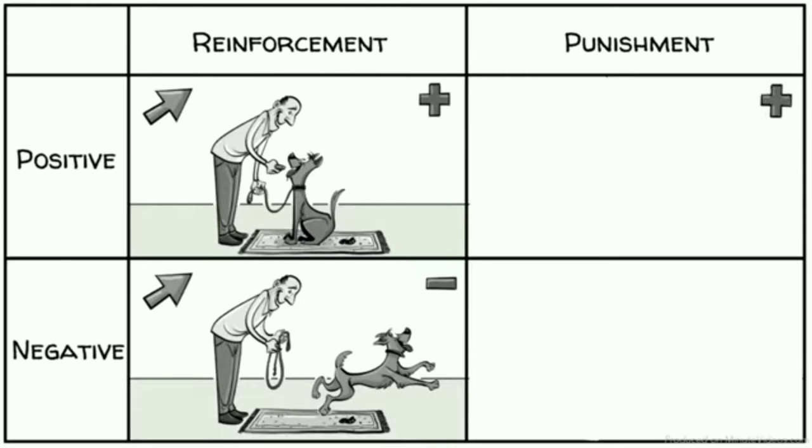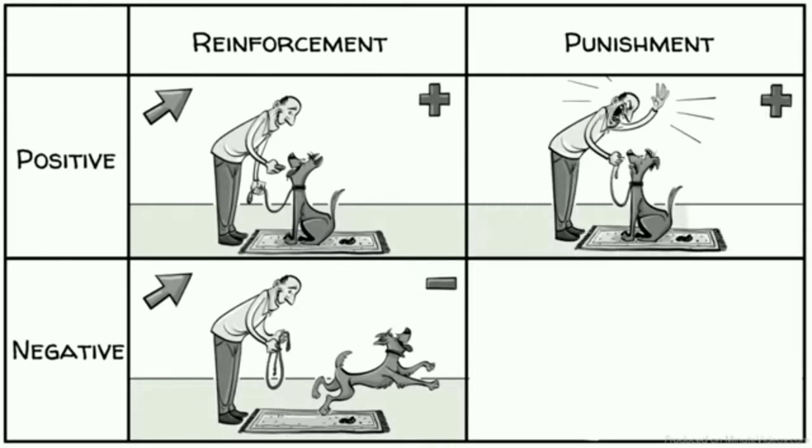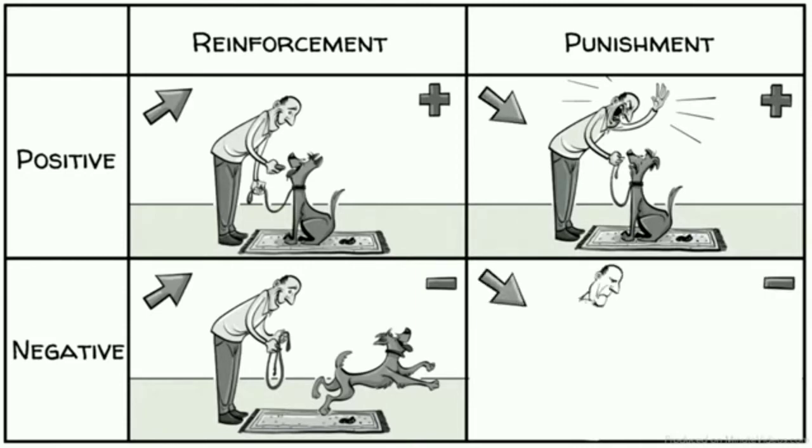If punishment is positive, we add an unpleasant response to decrease behavior. When punishment is negative, we also want to decrease behavior, now by removing something pleasant, like the comfy carpet.